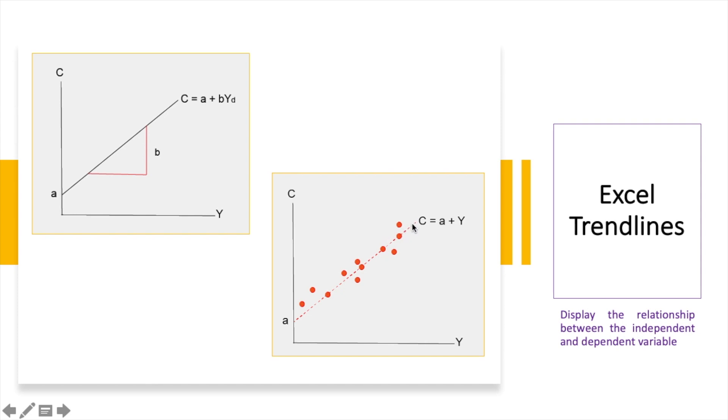So in order to do that, we can use Excel trendlines. Now, what the Excel trendlines will do is it will display the relationship between the independent and the dependent variable.